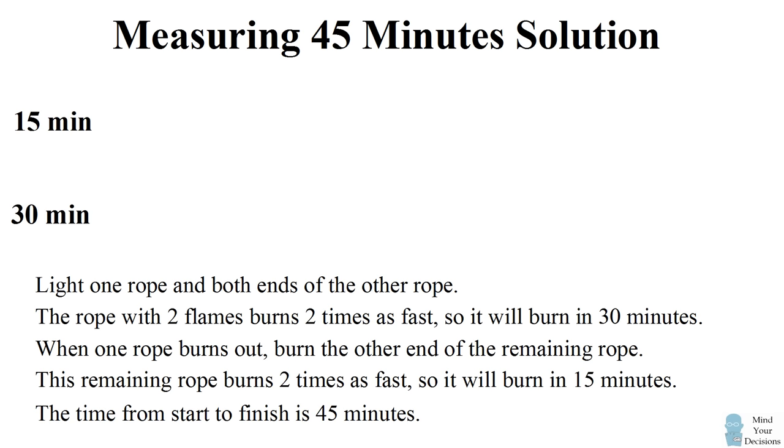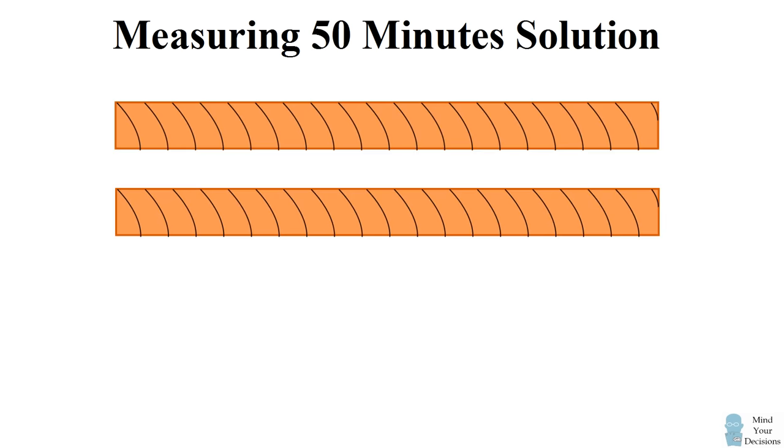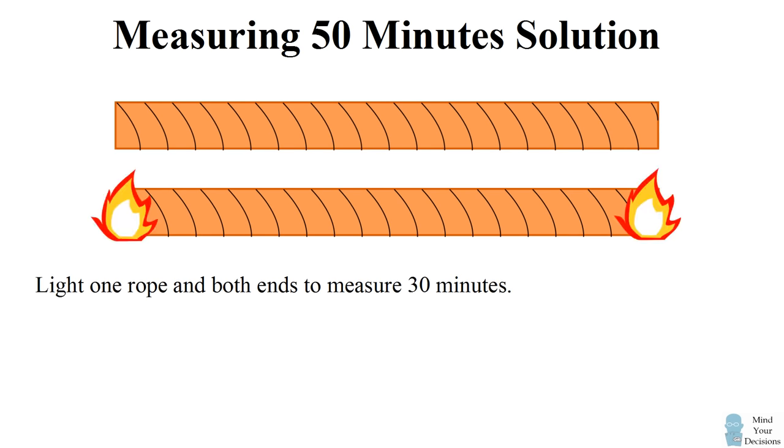So now let's tackle the next problem. How can we measure 50 minutes? We already know how to measure 30 minutes. We light one rope at both ends. This rope will burn up in 30 minutes. So the question is, how do we measure 20 minutes? The key is that if one rope burns in 30 minutes when it has two flames, the same rope will burn in 20 minutes when it has three flames going.